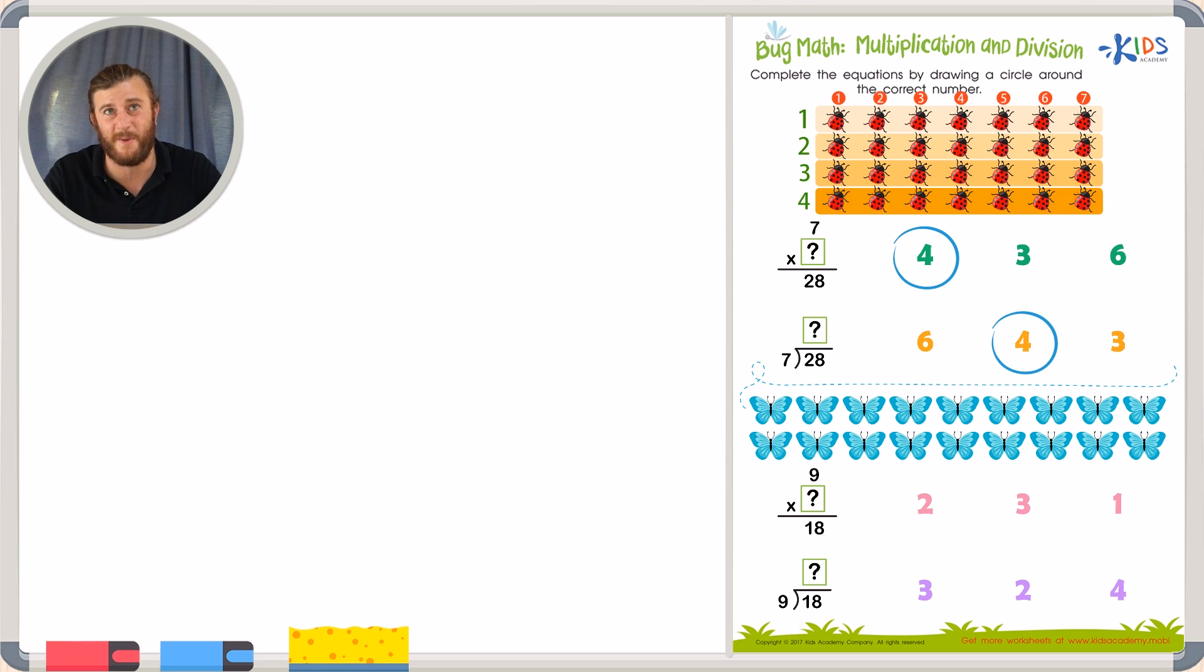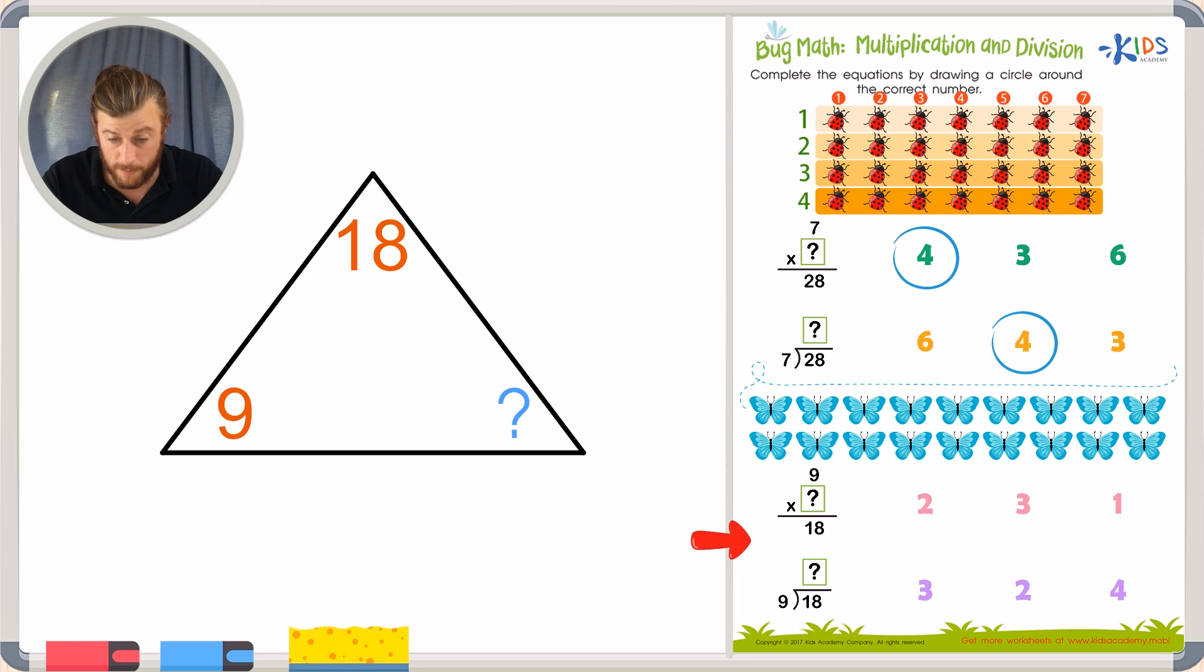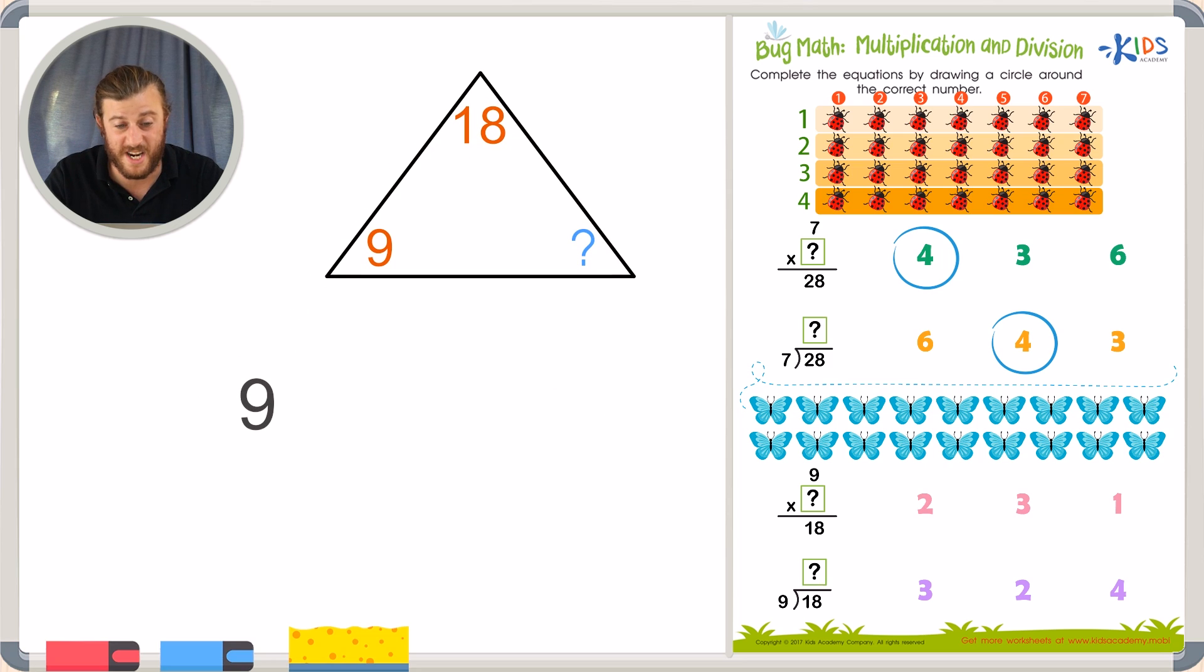Our next problem is another fact family problem. This time our fact family has the number 18 at the top and the number 9 on one of the sides of the bottom. We're looking for another unknown number. In this problem, I know the total is 18 butterflies. When I see this problem 9 times blank equals 18, I know that I can relate it to a division problem. I see it right here on the bottom too.